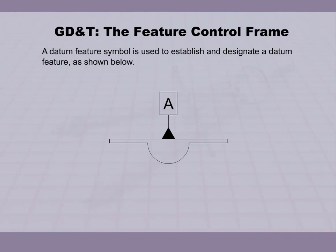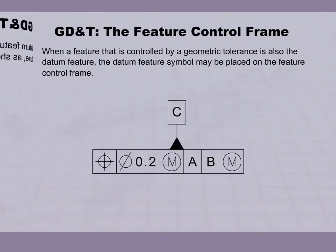A datum feature symbol is used to establish and designate a datum feature, as shown below. When a feature that is controlled by a geometric tolerance is also the datum feature, the datum feature symbol may be placed on the feature control frame.